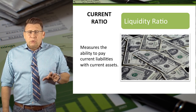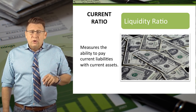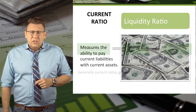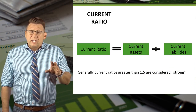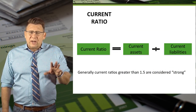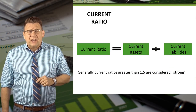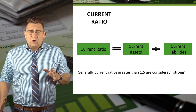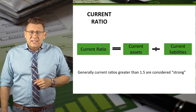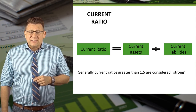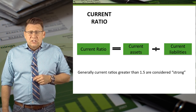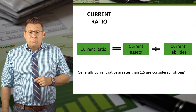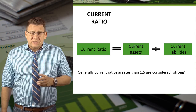In general, the larger the current ratio, the better the ability to pay debts. The current ratio is calculated as current assets divided by current liabilities. It tells us how many more dollars of current assets a company has than current liabilities. Generally, current ratios that are greater than 1.5 are considered strong.